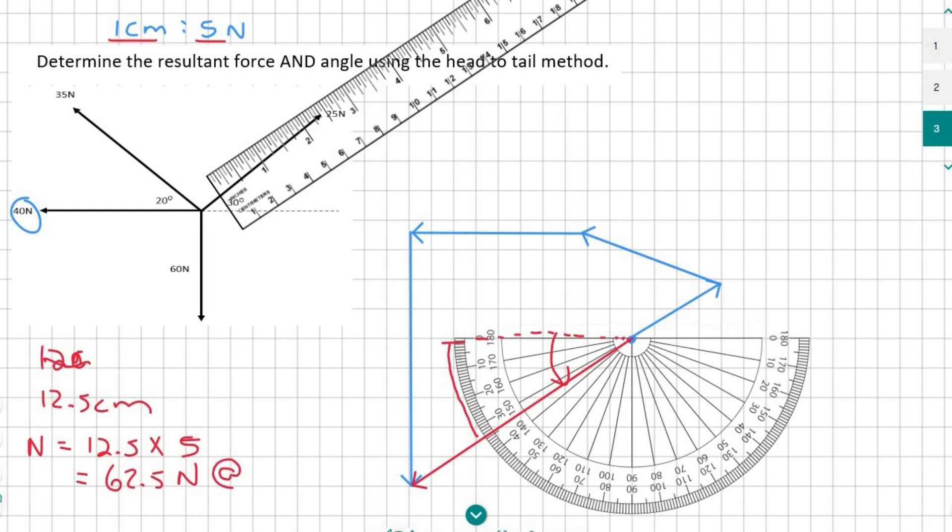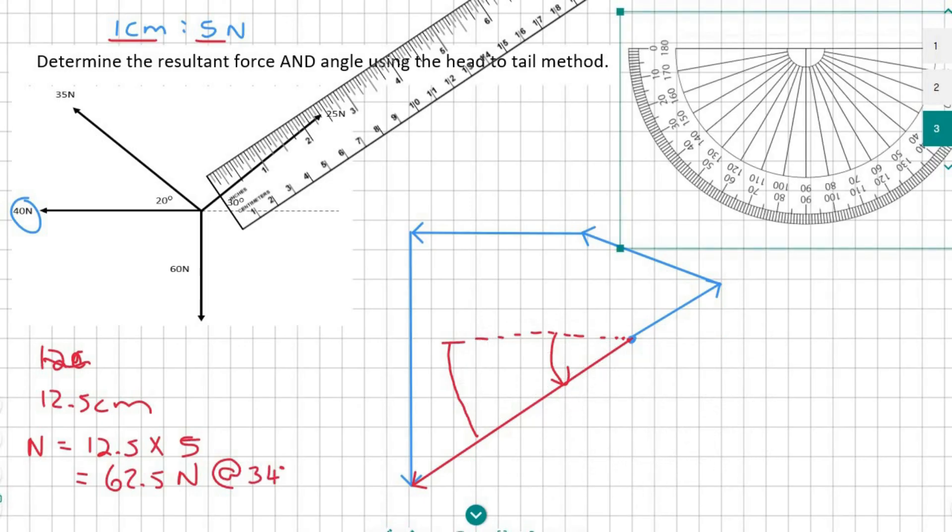So I'm going to say at 34 degrees. But now you can't just say 34 degrees. You're measuring 34 degrees underneath. So that means below, which means south of this line over here. Now that is a west line. So we're going to say south of west.